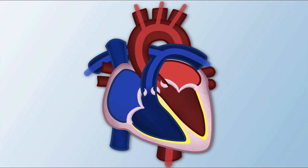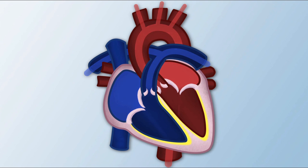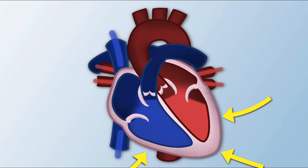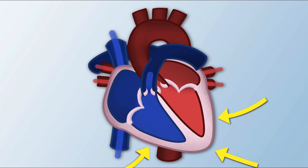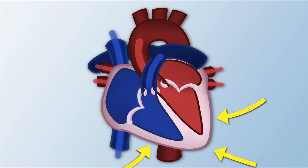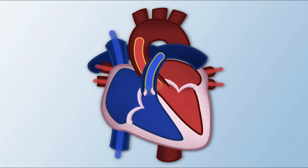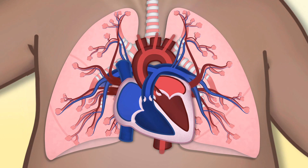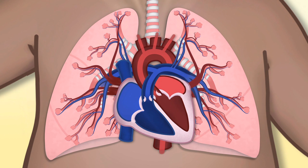Preload is the volume of blood in the heart during filling, or diastole, and reflects the circulating intravascular volume. Contractility refers to the heart muscle performance as a pump. Afterload is the resistance of blood flow out of the heart. Pulmonary vascular resistance is the resistance of blood from the right ventricle to the lungs. Systemic vascular resistance is the resistance of blood flow from the left ventricle to the body.